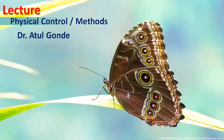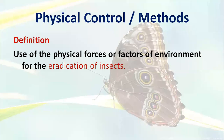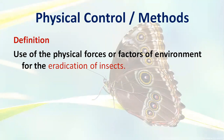Welcome back. Our new topic is physical control, or the tools of IPM. This method is a modification of different physical factors. Already in the environment there are a lot of pests attacking crops, so to minimize and prevent pest damage, this method is very helpful. Physical control is defined as the use of physical forces or environmental factors for the eradication of insect pests or to prevent loss of crops and stored grain products.